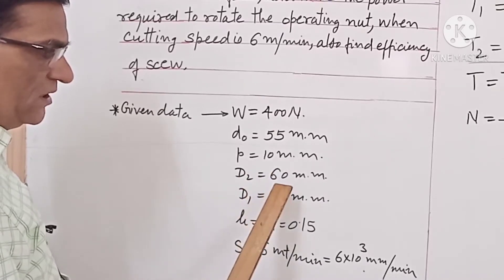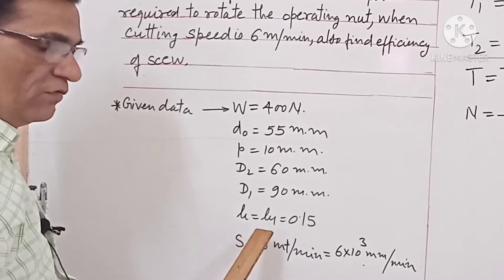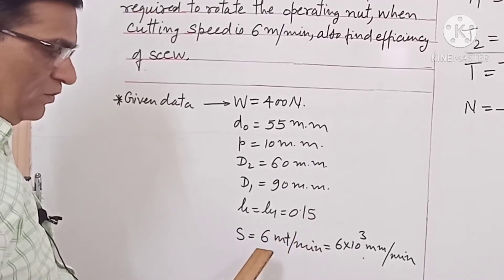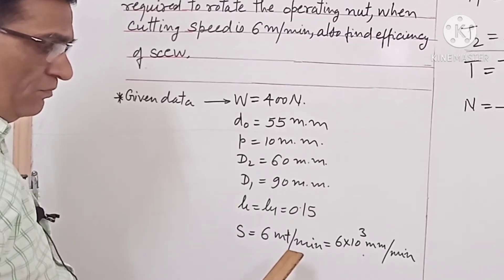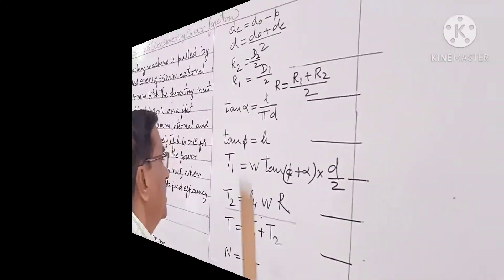D2 is equal to 60 mm. D1 is equal to 90 mm. Mu is equal to mu1, that is equal to 0.15, and speed is equal to 6 meter per minute, that is equal to 6 into 10 raised to 3 mm.